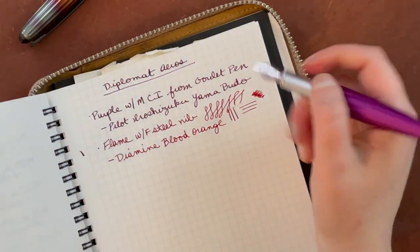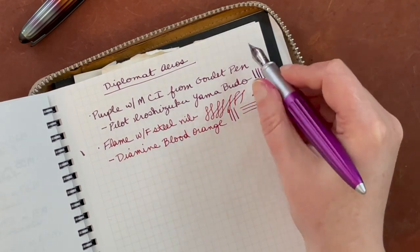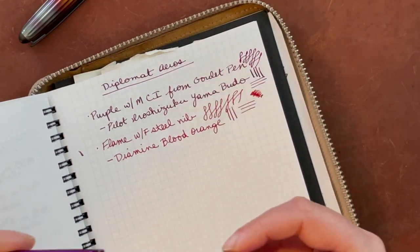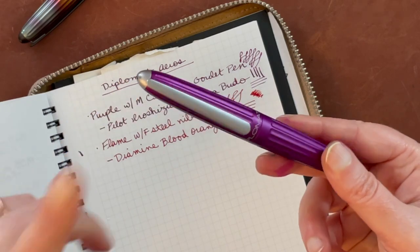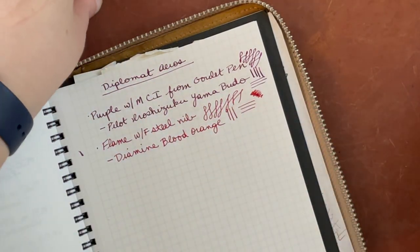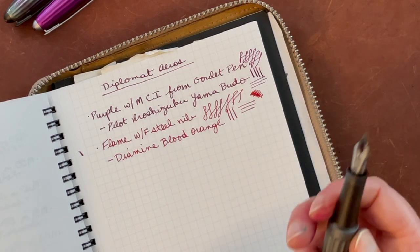Okay. And I think my Yamabudo has gotten a little darker. I've had it for a while. And like I said, I just filled this after it went dry and I had not cleaned it in a little while. So I wonder if that's also factoring into the darker nature of the ink. Plus it's a wet nib. So that might be it too.